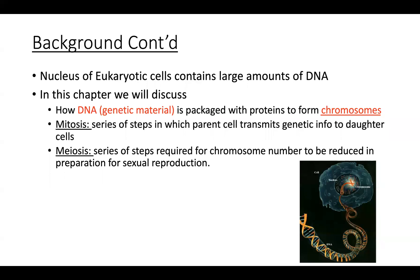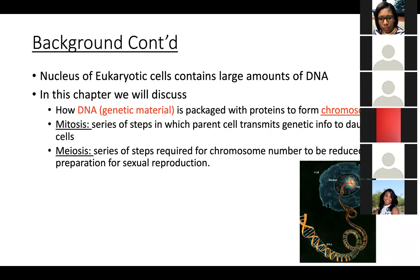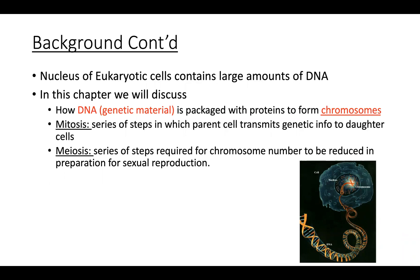The nucleus of the eukaryotic cell is where DNA can be found. The genetic material, which is DNA, is packaged in the form of chromosomes. Write down the term chromosomes. When looking at the genetic material in humans, our somatic cells have a certain number of chromosomes. A chromosome is basically packaged DNA wrapped around protein.